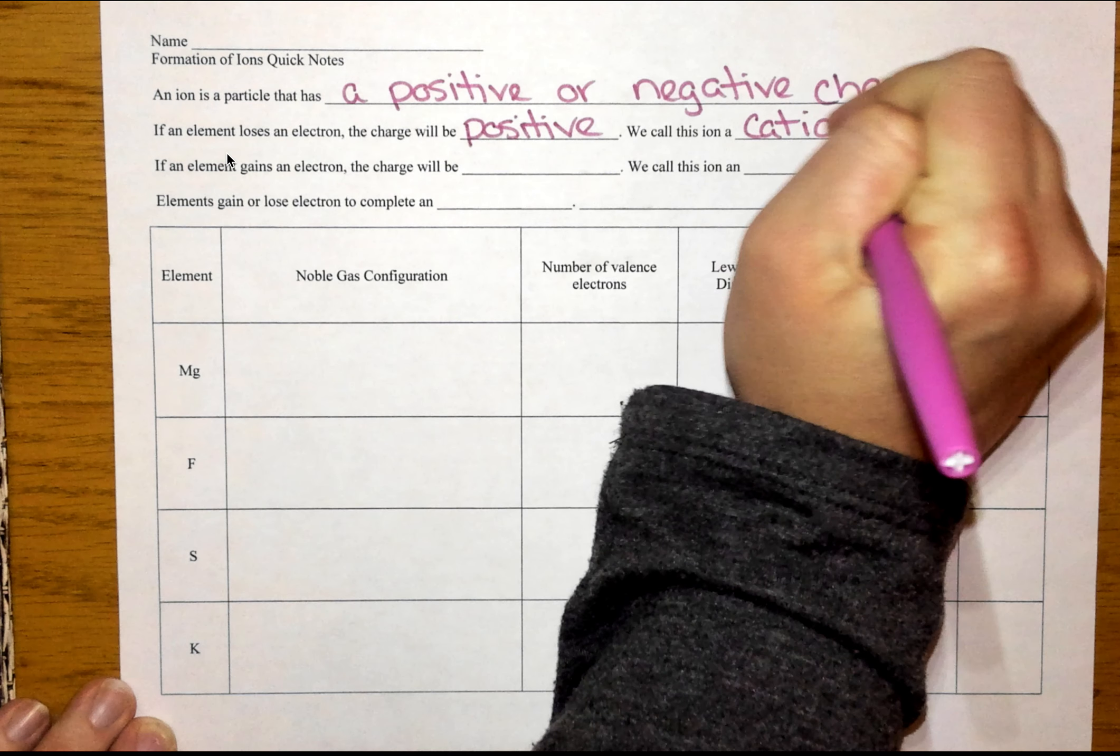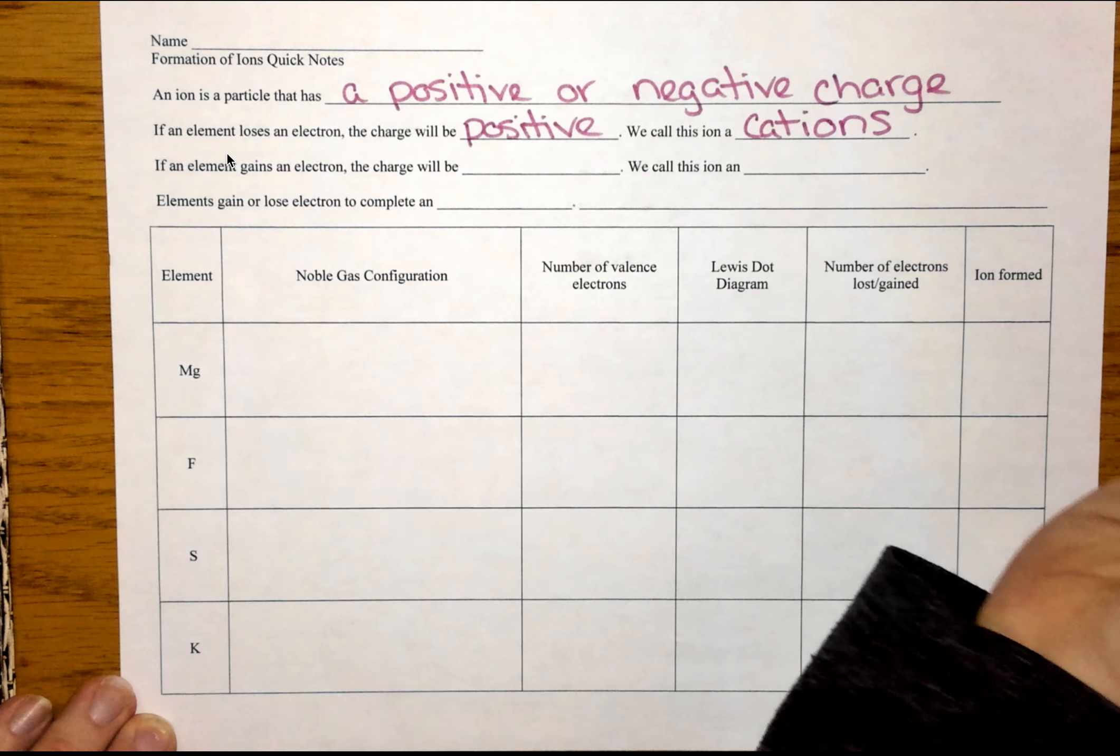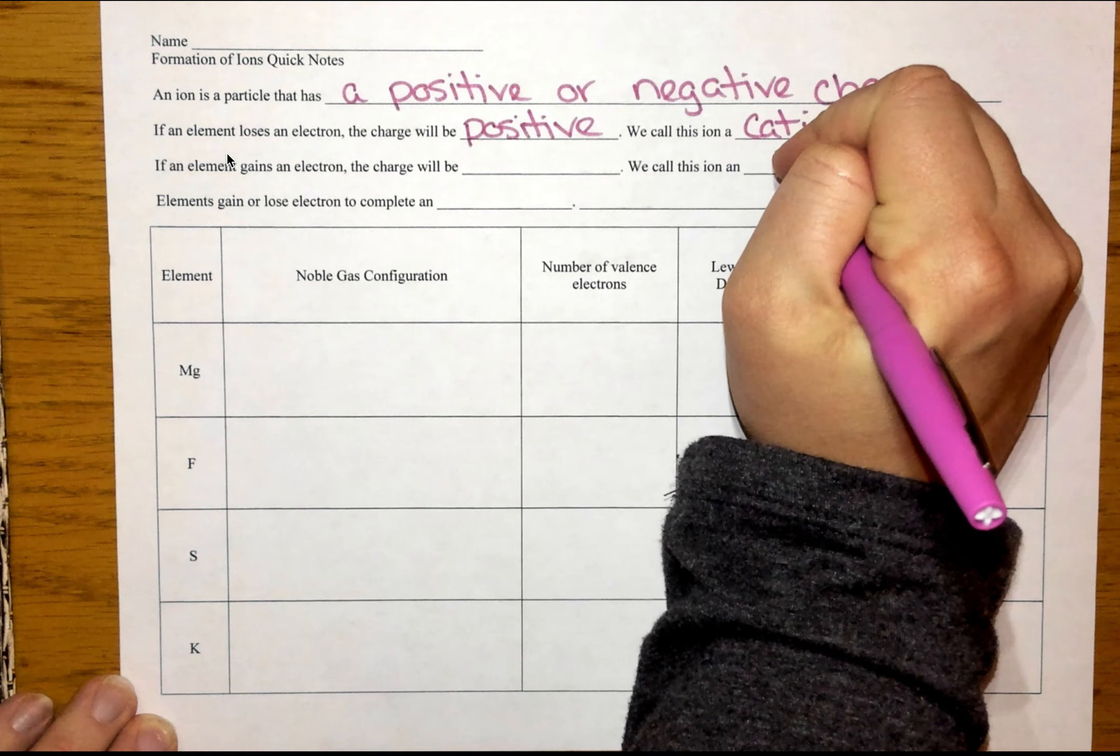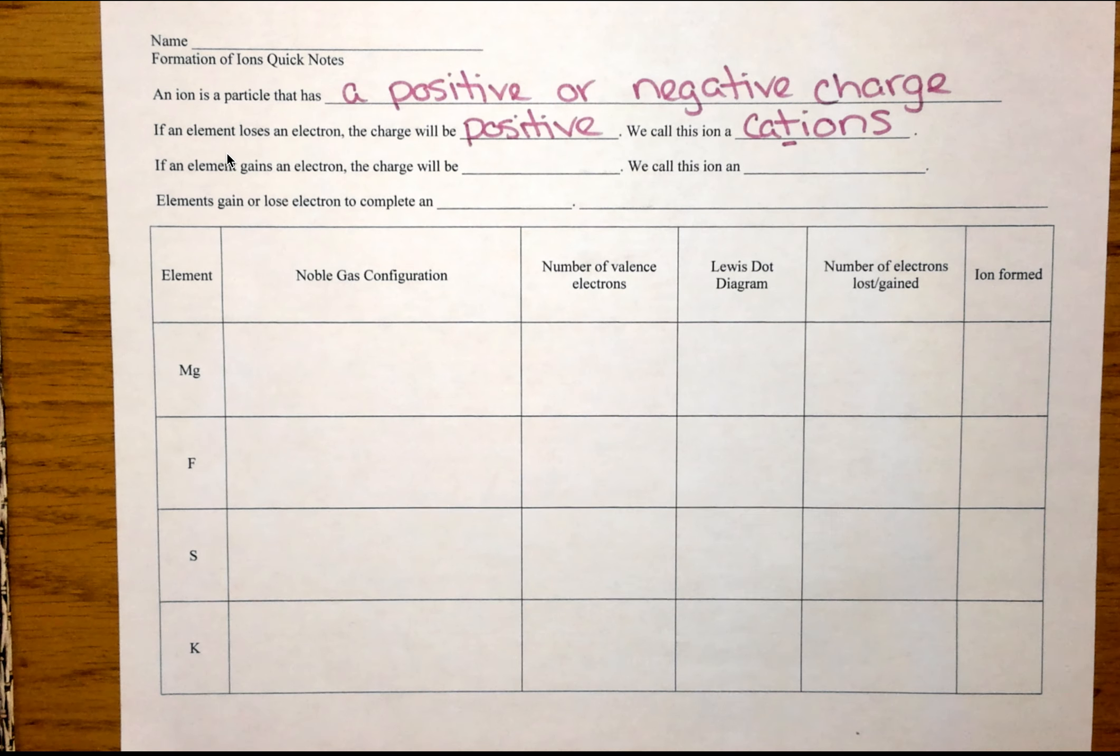And we call positive ions cations. Now a few ways to remember this. One, this T makes a nice little plus sign so you know that cations are positive. Or, the way my chemistry teacher taught us and my Gen Chem 1 professor, both of them said because cat-ions are pawsitive.